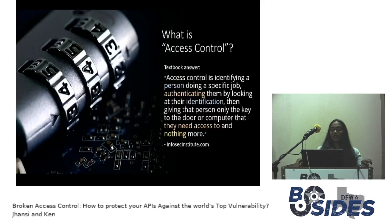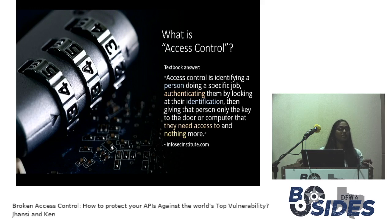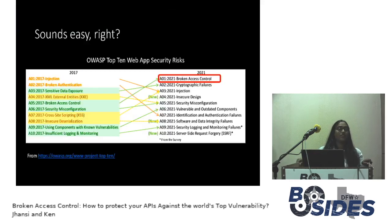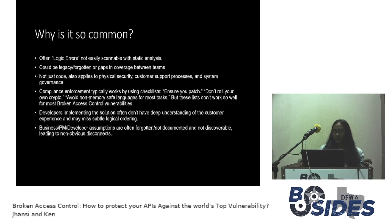Let's start with what exactly is access control. The textbook definition goes like this: access control is identifying a person doing a specific job, authenticating them by looking at their identity, and then giving that person only the key to the door — only to the resource they need access to, and nothing more. Just identifying who the person is and giving them that access. As simple as that. But if it sounds easy per the definition, why is it listed as the top vulnerability today? That's what we're trying to understand.